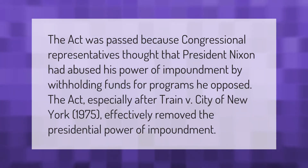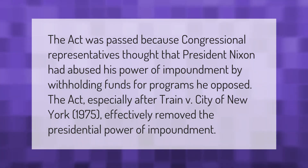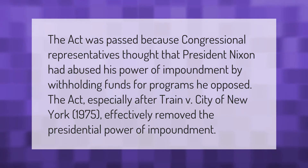The act was passed because congressional representatives thought that President Nixon had abused his power of impoundment by withholding funds for programs he opposed. The act, especially after Train v. City of New York (1975), effectively removed the presidential power of impoundment.